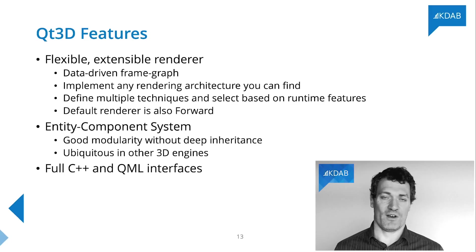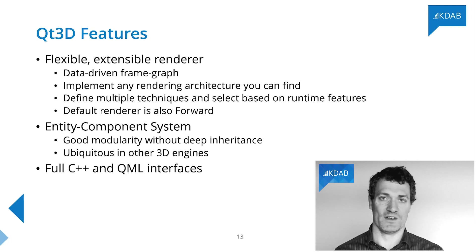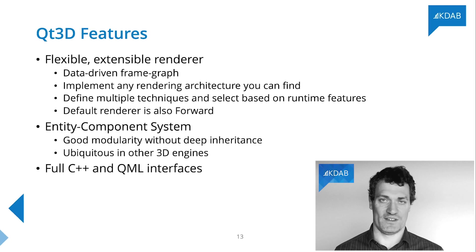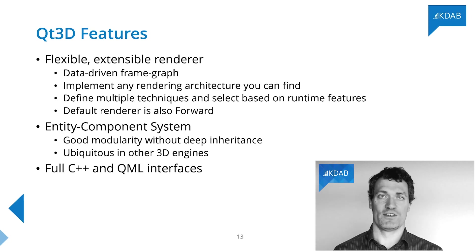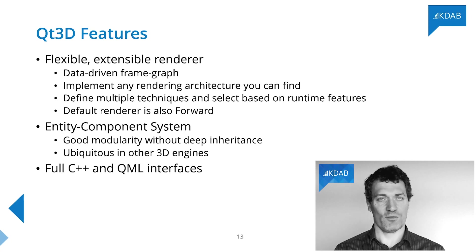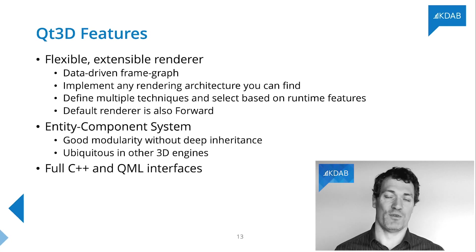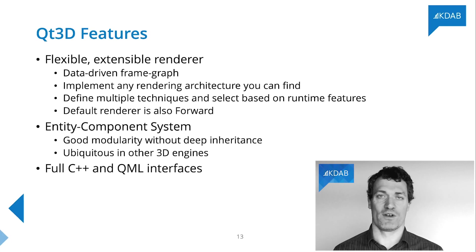You can potentially go as far as 10, 15, or 20 render passes if you want to do something very complicated with different intermediate steps for lighting, surface appearance, shadows, bump mapping, and so on. There is, of course, a default renderer, which is also a Forward Plus renderer, and this is available out of the box to avoid too much extra configuration work for you when using Qt 3D.